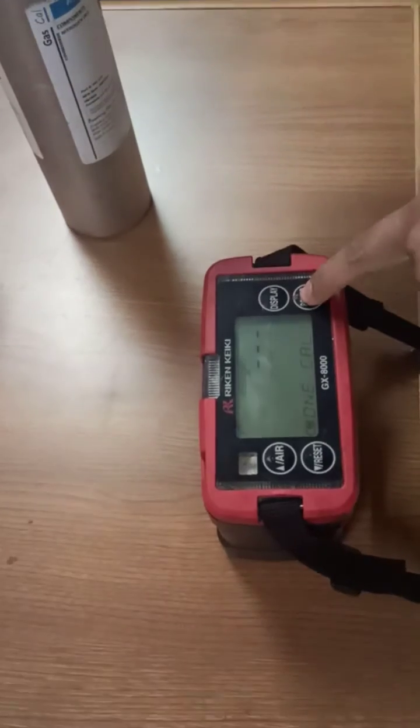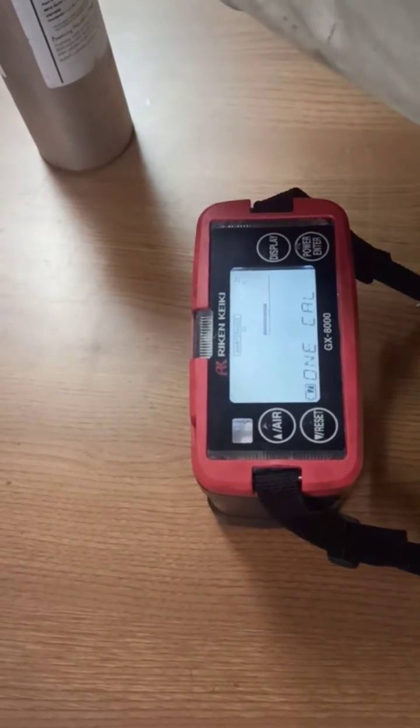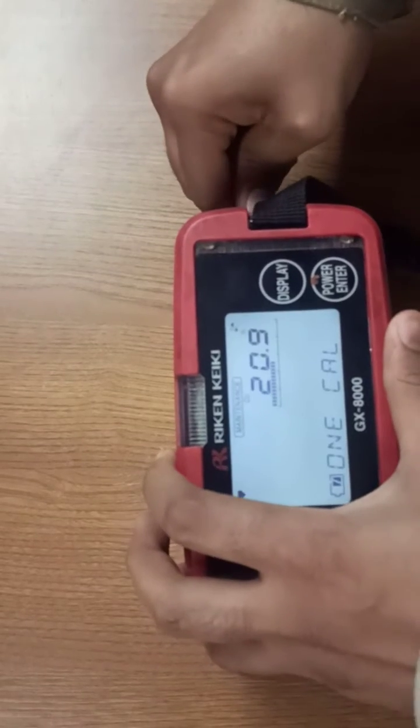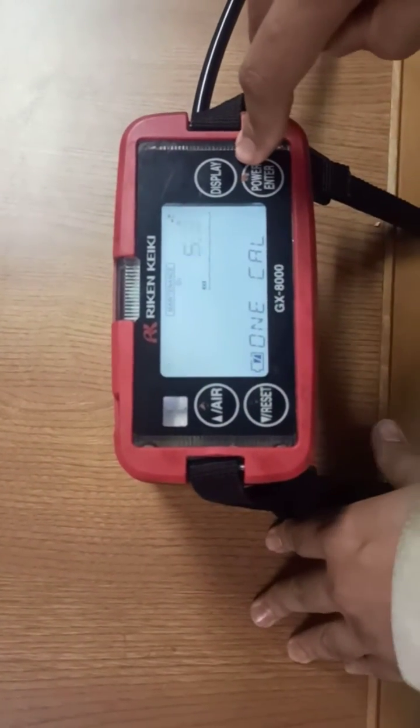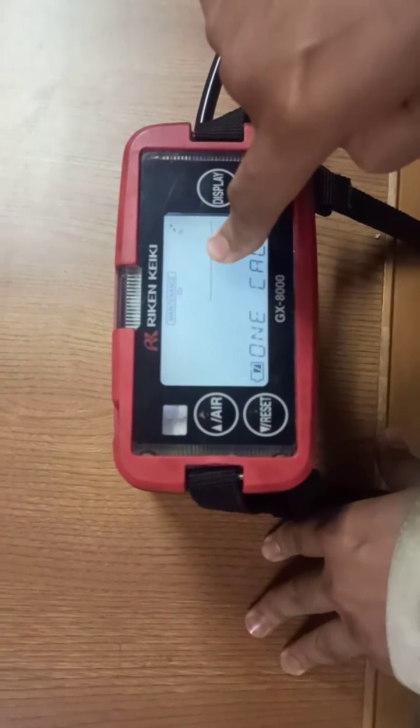Now we will enter the mode. It is showing 20.9 as it should. Now we are connected to the span gas bottle, so it should show nearly zero percentage of oxygen.